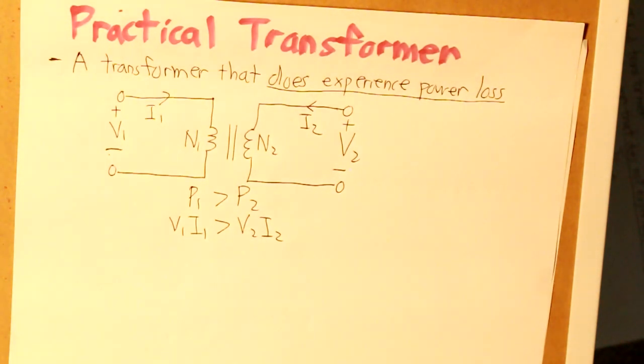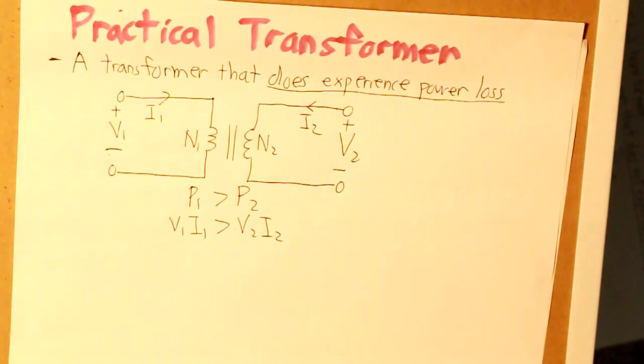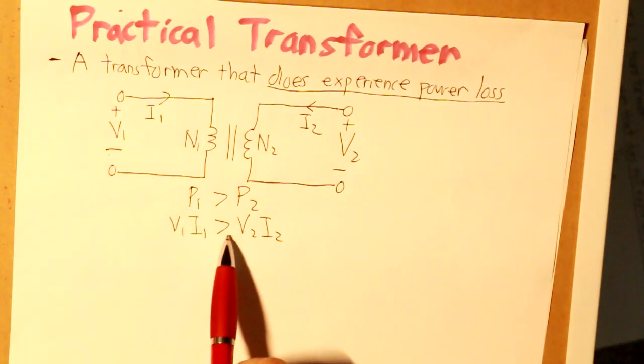It cannot be the other way around because, in reality, how could you produce more power? So, it does experience power loss in a real physical environment due to the physical environment. P1 is greater than P2.